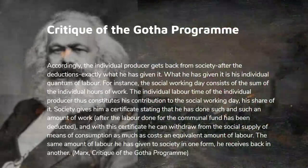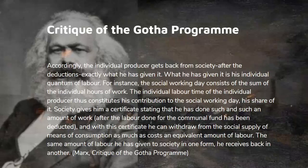We find a similar, though more precise, formulation by Marx, where he's talking about the Gotha programme of the German Socialist Party. He says: 'Accordingly, the individual producer gets back from society after deductions exactly what he has given it. What he has given it is his individual quantum of labour. The labour time of the individual producer constitutes his contribution to the social working day, his share of it. Society gives him a certificate stating that he has done such and such an amount of work. After the labour done for the Commonwealth Fund has been deducted, with this certificate he can withdraw from the social supply of means of consumption as much as costs the equivalent amount of labour. The same amount of labour is given to society in one form; he receives back in another.'